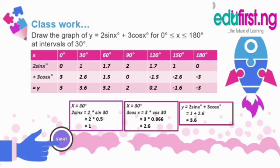Now, the final value, which is y, is actually 2 sine x plus 3 cos x. We have 2 sine x as 1, and we have 3 cos x as 2.6. So, when we add that up, we have 3.6. Remember, we are only following the equation. So, when you follow that for each row and column for each angle, you would have a complete table.